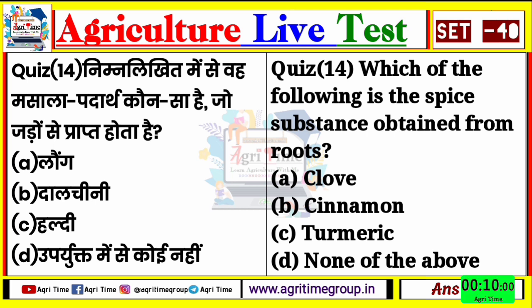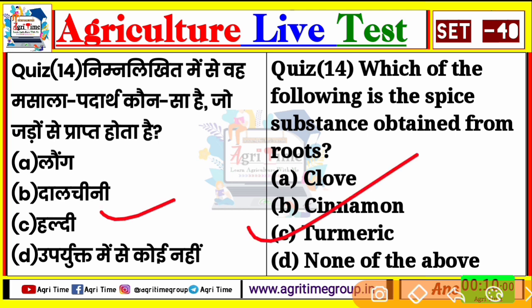बहुत ही simple भी quiz है - निम्नलिखित में से वह मसाला पदार्थ कौन सा है जो जड़ों से प्राप्त होता है। तो लॉंग तो होता नहीं, दालचीनी भी नहीं होता, तो होता कौन है - हल्दी होता है, यानि कि turmeric। तो option number C, quiz 14 के लिए right answer हो जाएगा।